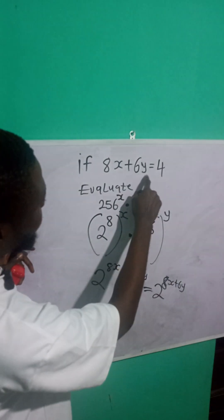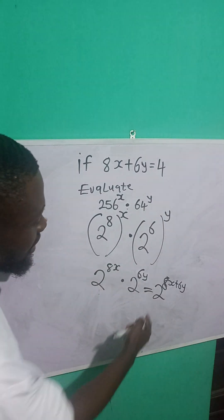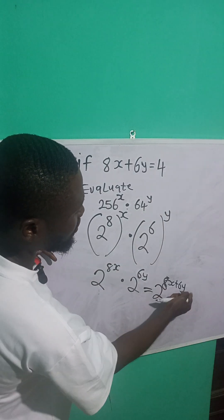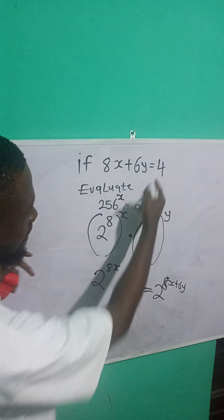Now remember, we have 8x plus 6y here. It's equal to 4. So this means that I'm going to replace 8x plus 6y with 4 here because it's equal to 4.